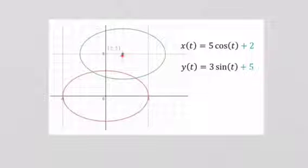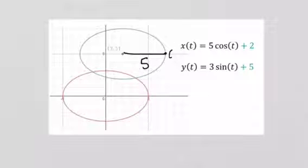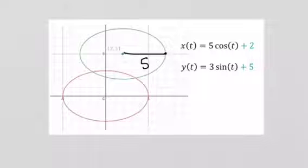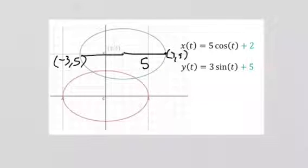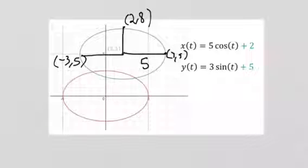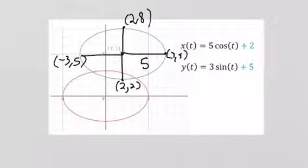So our new center is at (2, 5). Drawing a line from the center to the edge, the semi-major axis of 5 takes us to the point (7, 5) in the positive x direction and (−3, 5) in the negative x direction. The semi-minor axis of 3 takes us up to (2, 8) and down to (2, 2). So there's our ellipse with its new shifted center.